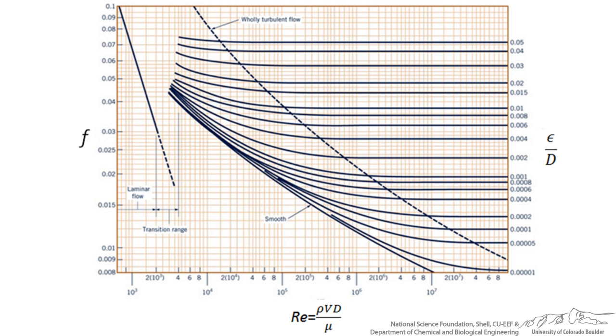For instance, if we had calculated relative roughness of 0.001, we would follow along this line to whatever our Reynolds number was. Then we would go to the left and determine what our frictional factor would be.